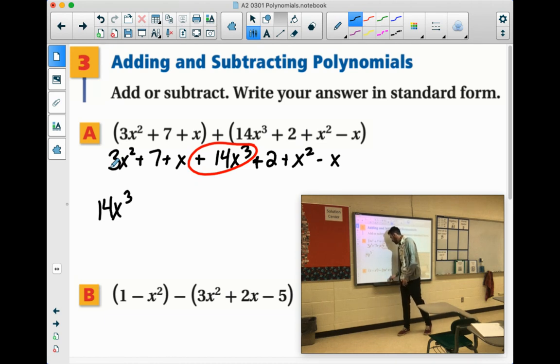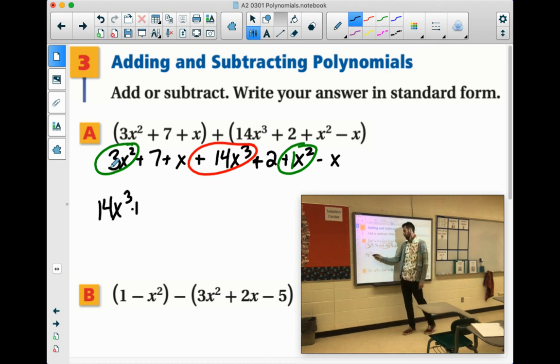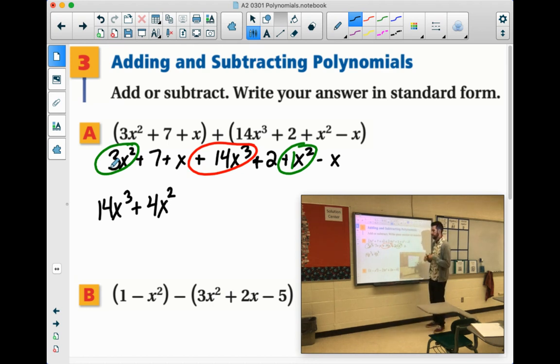And then we can look for x squareds. So I have 3x squared plus another x squared, which is 1x squared, right? So 3x squared plus 1x squared would give us 4x squared. You don't change the exponent when you are adding or subtracting. Only when you multiply or divide do the exponents change.